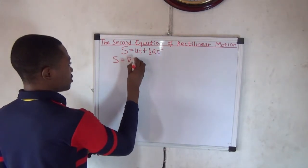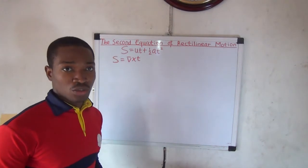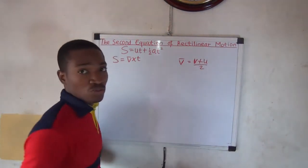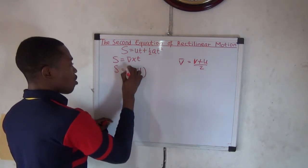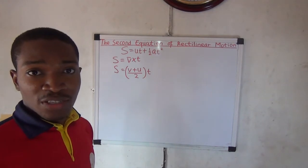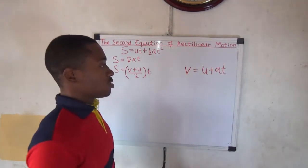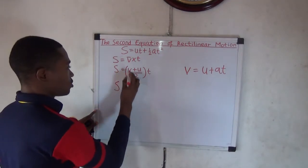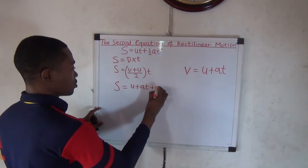Average velocity equals final velocity plus initial velocity divided by 2. Substituting this into the distance expression: S equals (V plus U) divided by 2, multiplied by time. Recalling the first equation V equals U plus AT, we substitute for V: S equals (U plus AT plus U) divided by 2, multiplied by T.